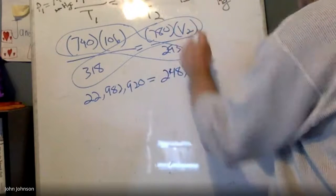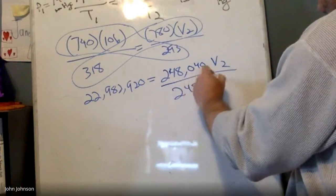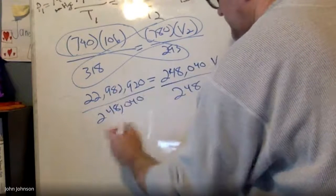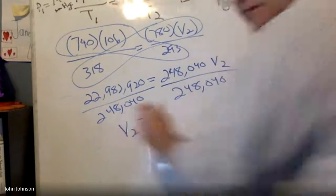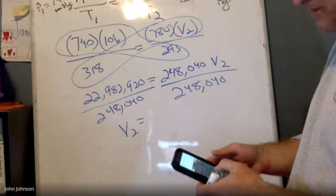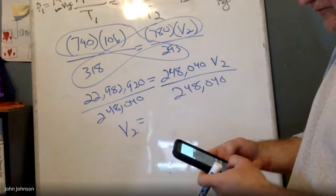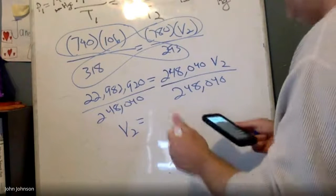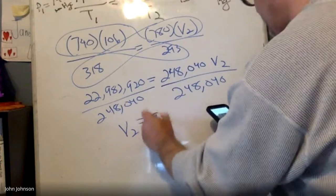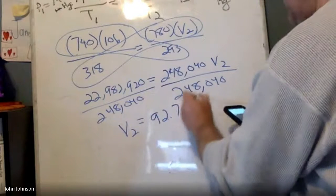Now it's an algebra problem. Solve for V2. I divide by 248,040, so I get 22,982,920 divided by 248,040, and I'm going to go three sig figs. I think that makes the most sense from what I see here. 92.7, and since volume is in liters, it's going to be in liters.